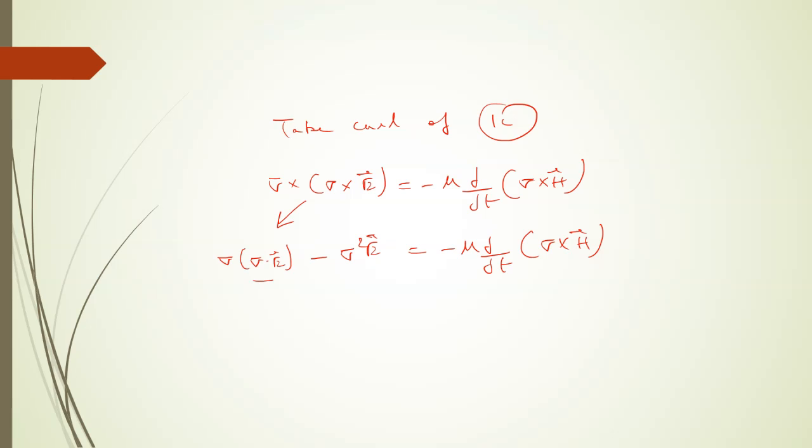Del dot E is equation 1a, del cross H is equation 1d. Put 1a and 1d in the above equation.